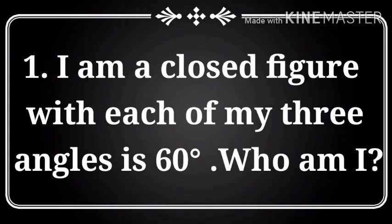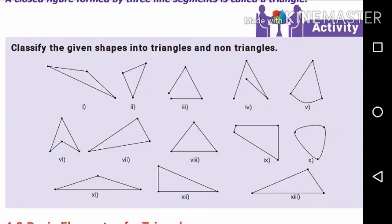First activity: I am a closed figure with each of my three angles equal to 60°. Who am I? Second activity: classify the given shapes into triangles and non-triangles. As you know, a closed figure formed by three line segments is called a triangle.